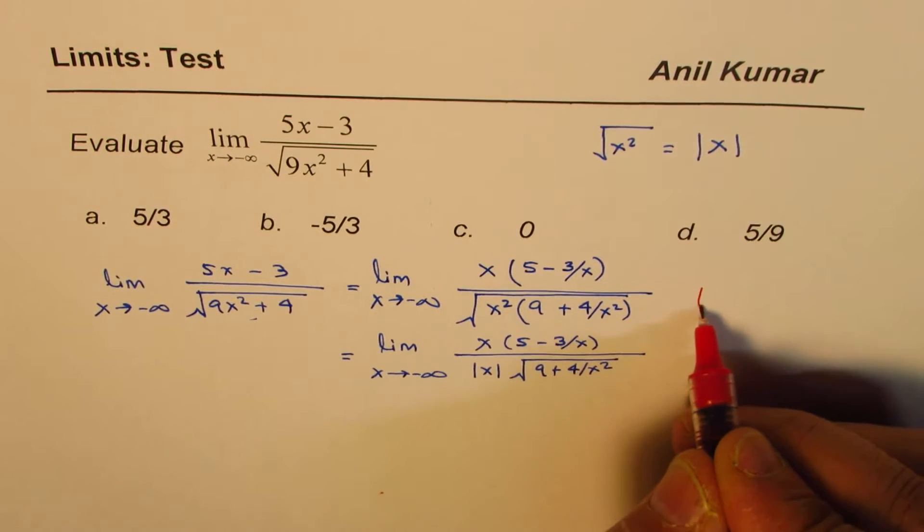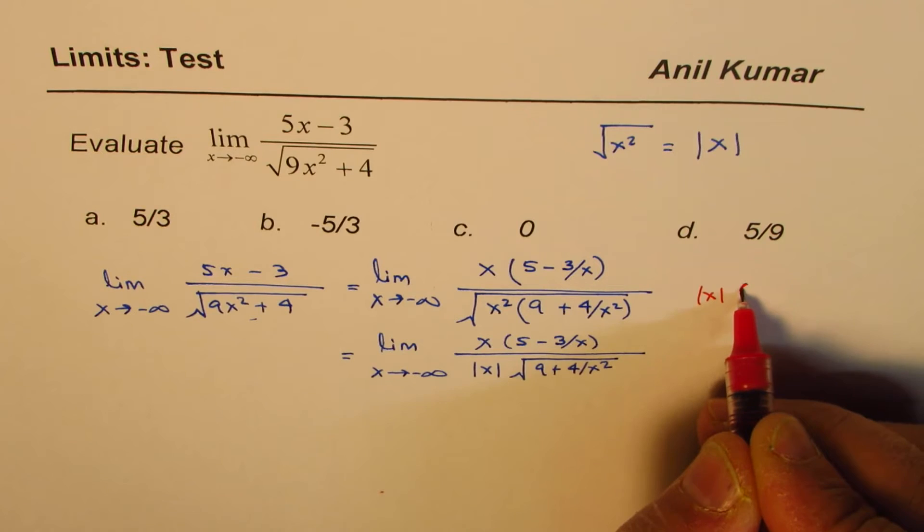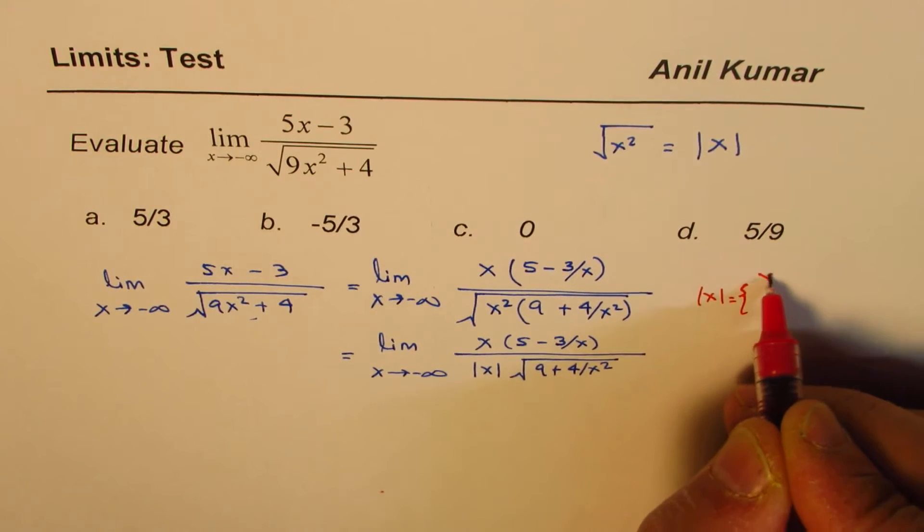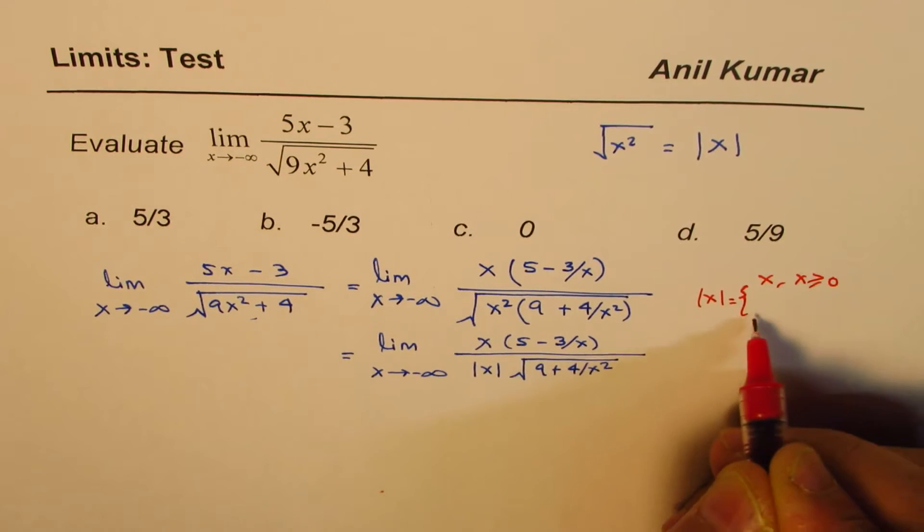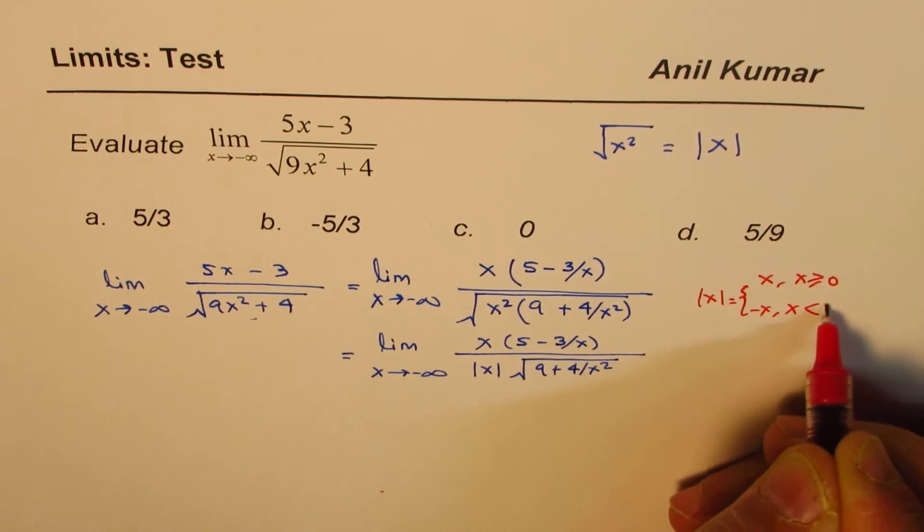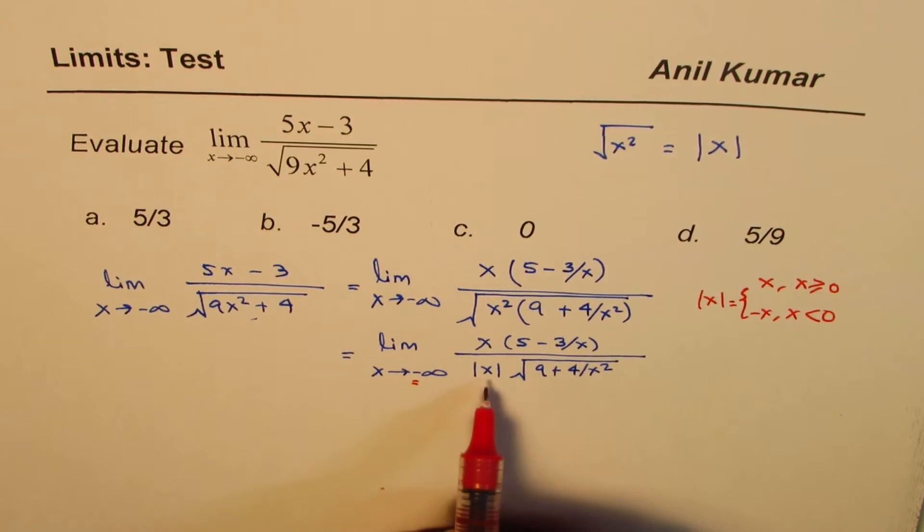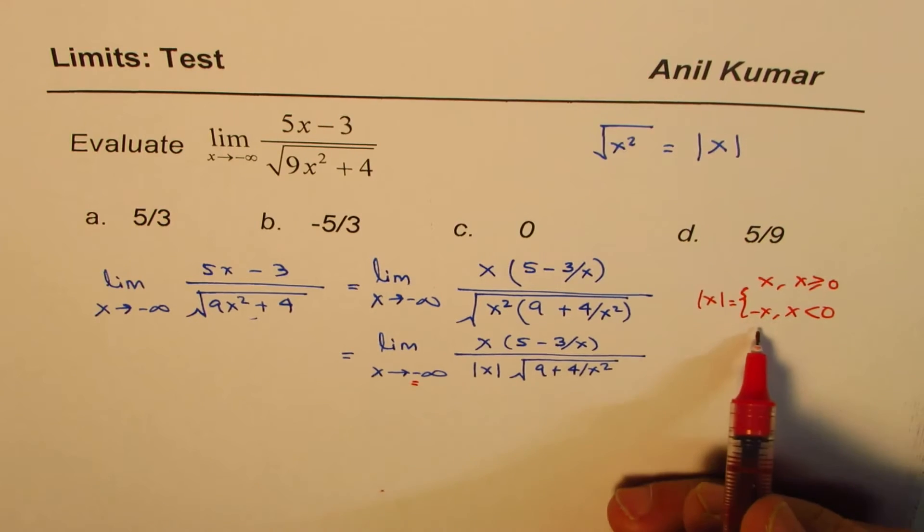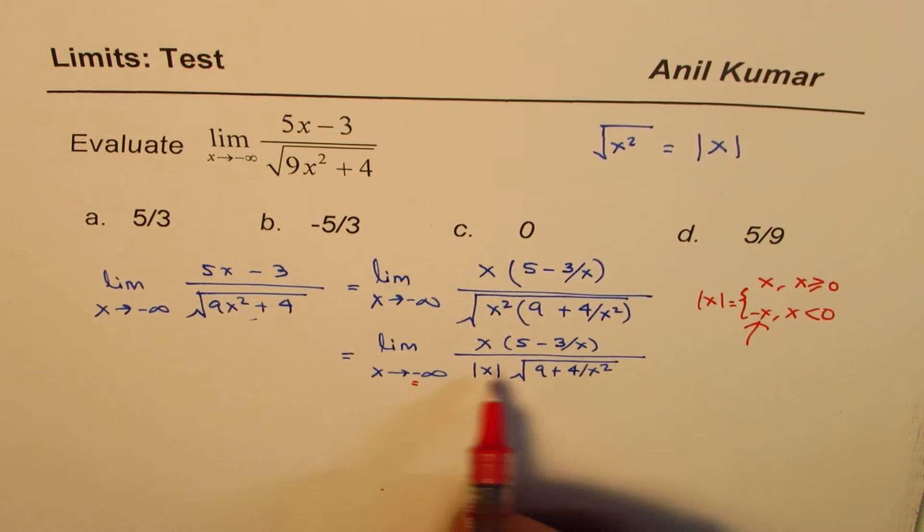The absolute x is defined as: it is x for x greater than or equal to 0, minus x for x less than 0. So if you are approaching minus infinity, it is minus x. It will be this part.